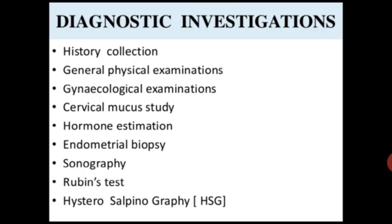For diagnosis, the diagnostic evaluation includes history collection, genetic assessment, physical examination, gynecological examination, cervical mucus study, hormonal estimation, endometrial biopsy, sonography, Rubin's test, hysterosalpingography (HSG). HSG is used to assess tubal patency.